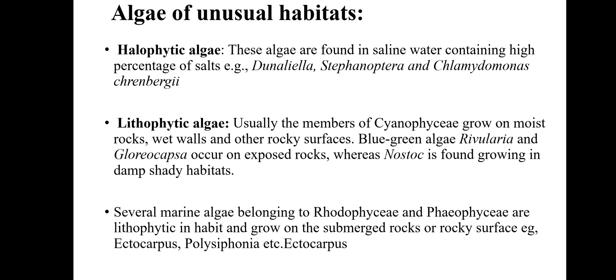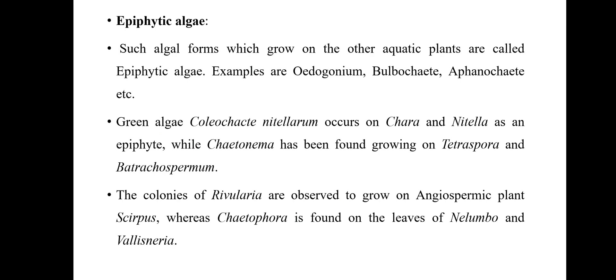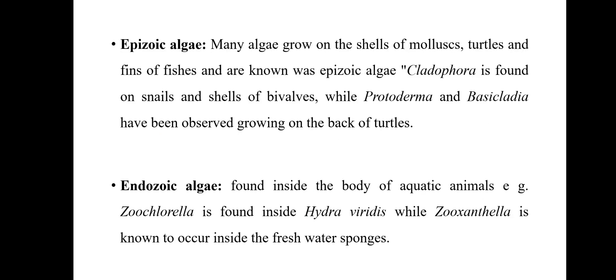Next, algae with unusual habitat. There are some halophytic algae — as the name suggests, they are present in saline conditions. Lithophytic algae grow on moist rock or rocky surfaces. Epiphytic algae are those that grow on other organisms, other algae, or other aquatic plants. Epizoic algae are found on the shells of molluscs, on turtles, and on the fins of fishes — the common example is Cladophora, found on snails and shells of bivalves. Endozoic algae are found inside the body of aquatic animals.